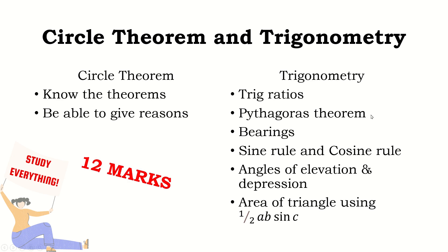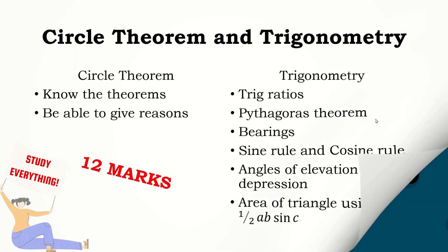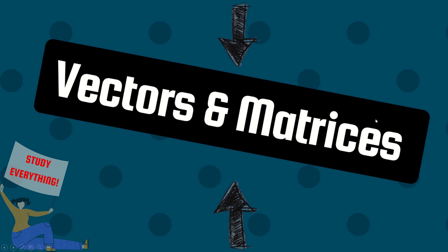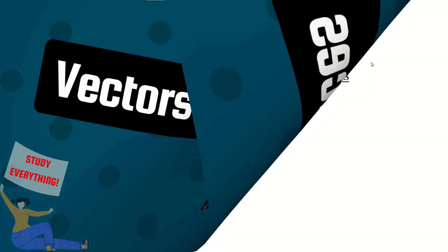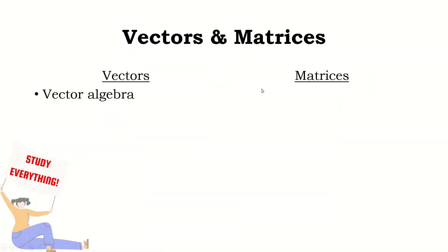Last but least, we have our vectors and matrices. That's the last question on every exam paper since I've looked at exam papers from 1989. That's the last question. On vectors: vector algebra—be able to add your vectors, multiply a vector by a scalar and add them.